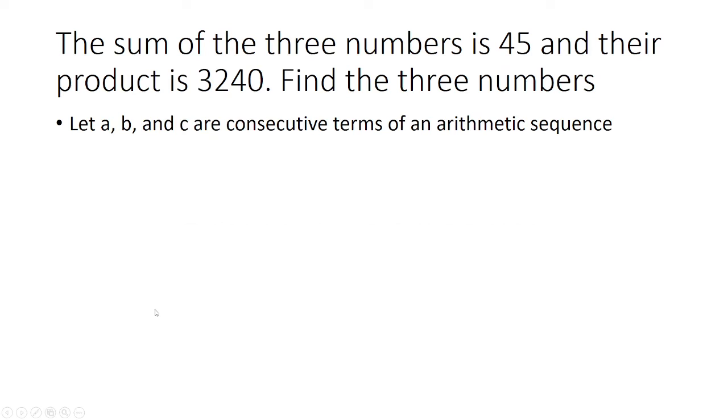So we're going to say A, B, and C are three consecutive terms of an arithmetic sequence. When we find the sum of these, A plus B plus C, we get 45. And when we multiply them, we get 3,240. So this is what is given to us.